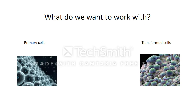Symmetric division starts with a stem cell, and that stem cell can divide into two identical cells that are either both differentiated or both stem cells. Asymmetric division also begins with a stem cell, but it creates different daughter cells — one differentiated cell and one stem cell.